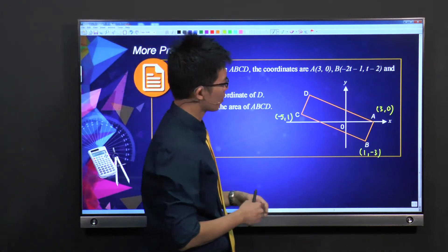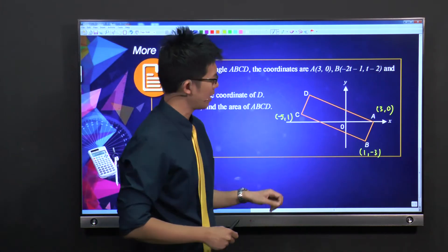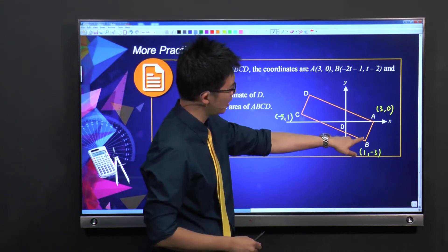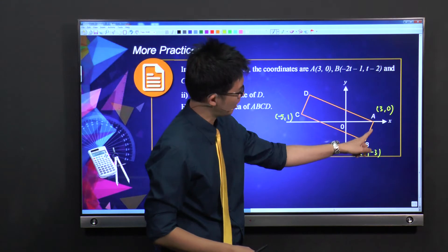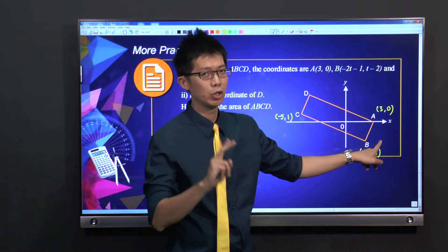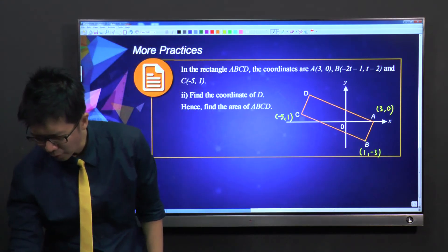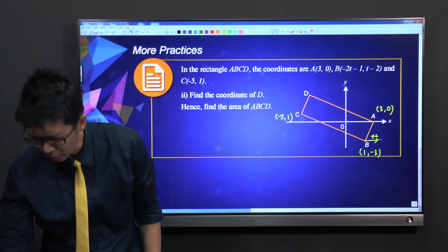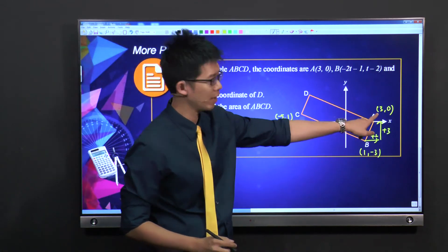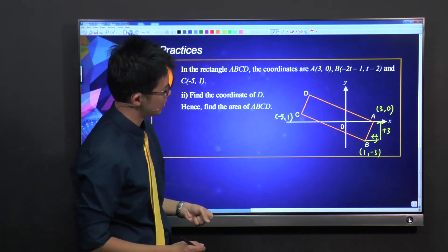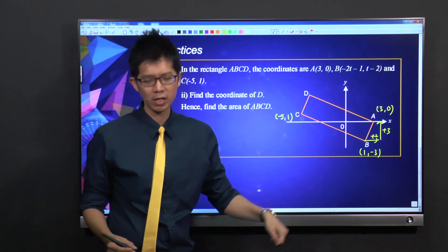But my favorite way is something even faster. If you think about it, from B to A, how do I get from B to A? B is at 1 and A is at 3, so I'm going to move forward by 2 units. And I'm at -3 and move up to 0, so I move upwards by 3. That's how I get from B to A.